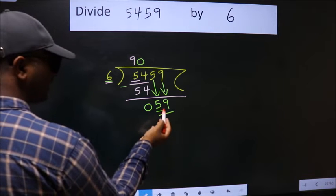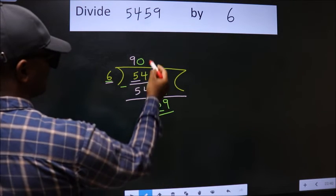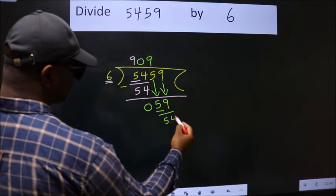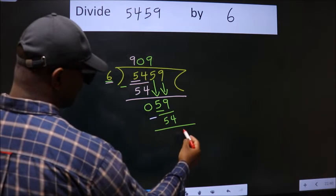So, 59. A number close to 59 in 6 table is 6 nines, 54. Now, we subtract. We get 5.